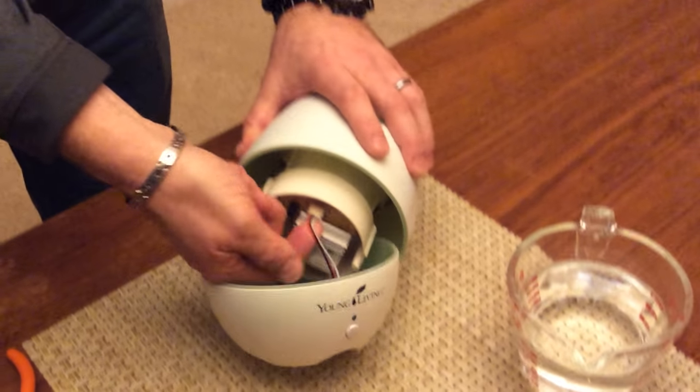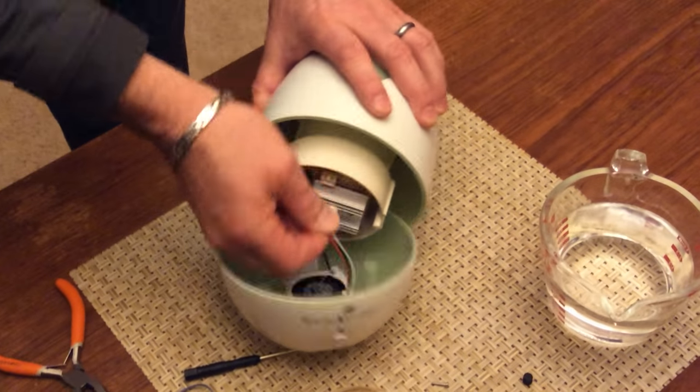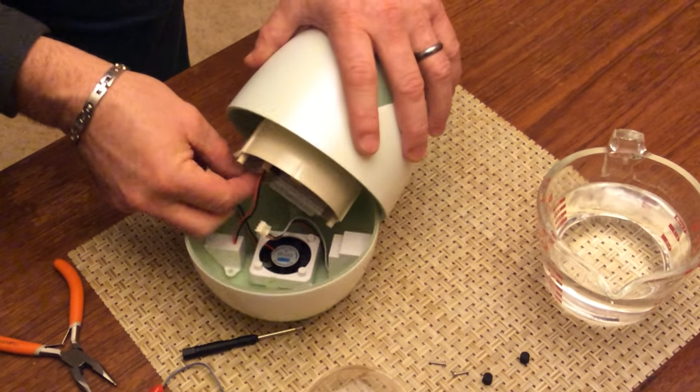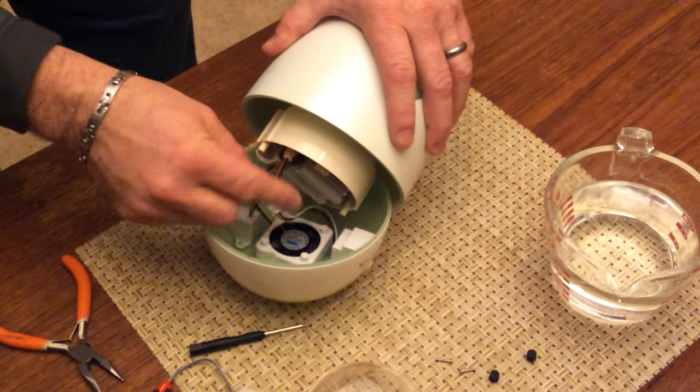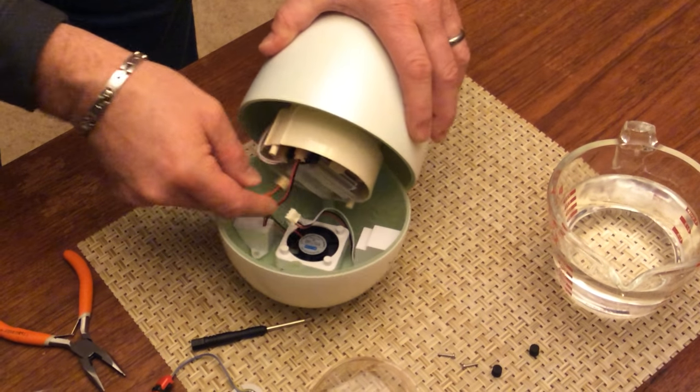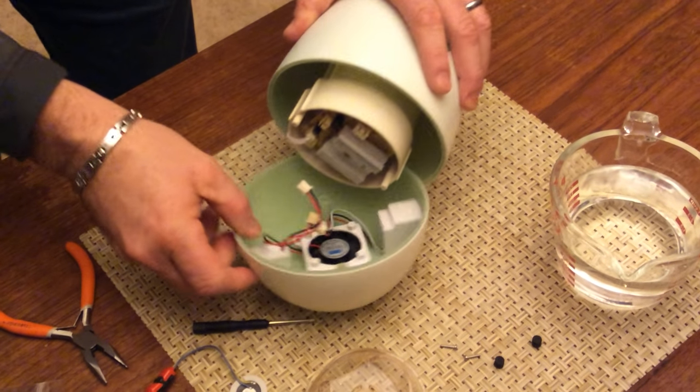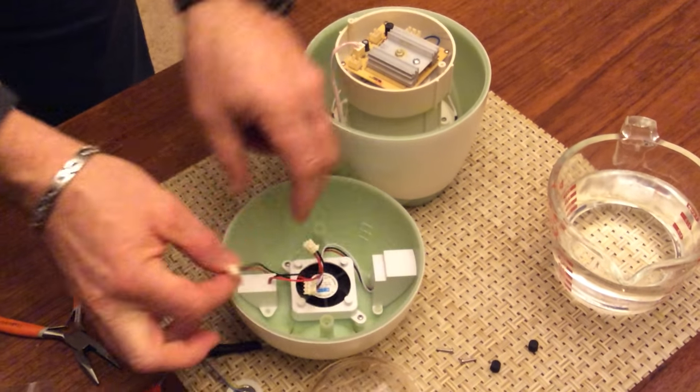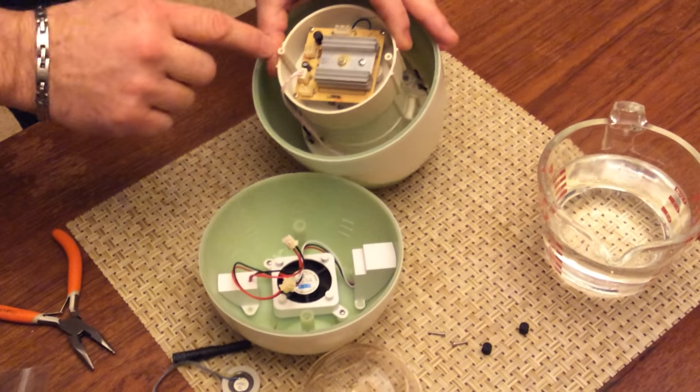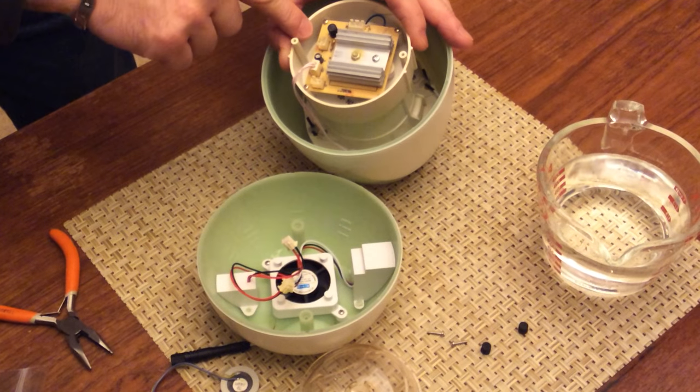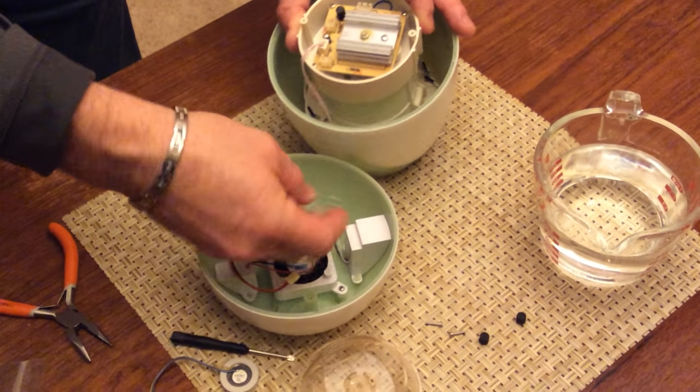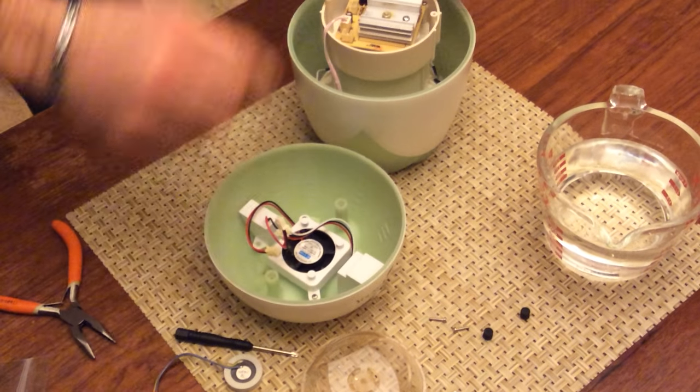What we want to do is take these apart so that we can get to everything. Everything's marked, so when we put this back together, at the bottom of this board we can see that this is marked. This three-pin connector goes to the button and the power indicator.